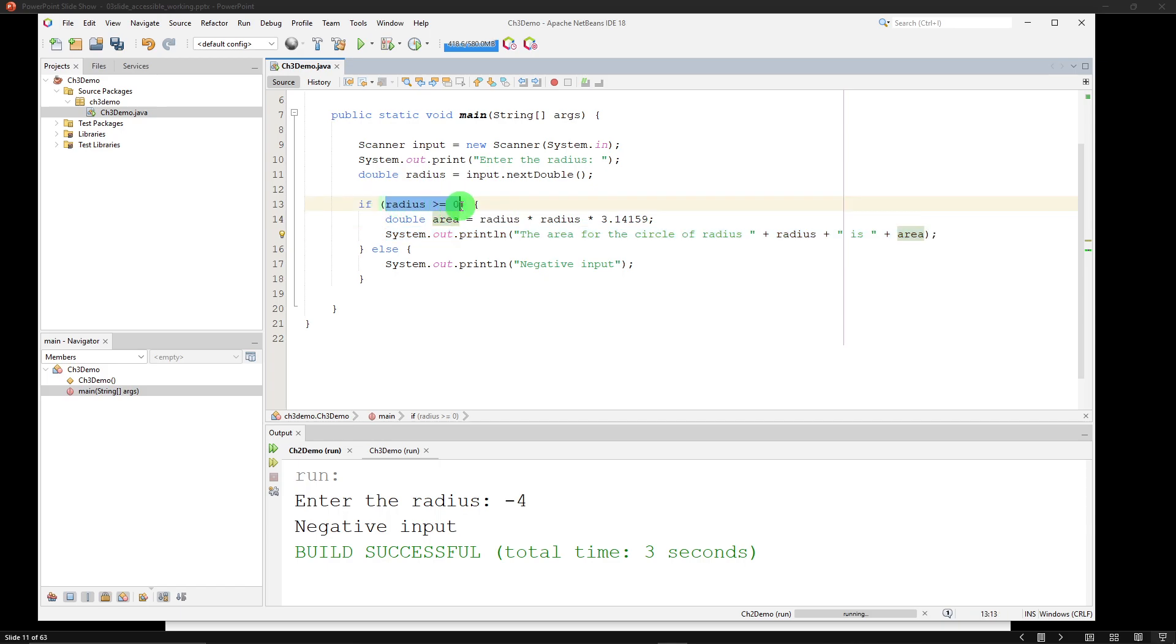But if radius is not greater than or equal to zero, meaning the user typed in a negative number, that will evaluate to false, which means we're going to run the else block, and it's going to run the code between these two curly braces, and it'll print out system.out.println. It will print negative input.